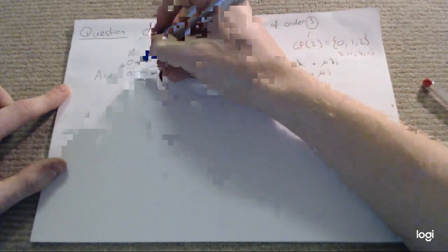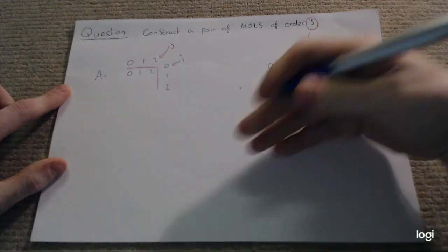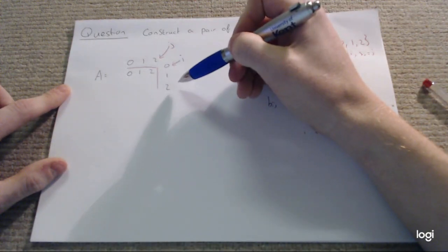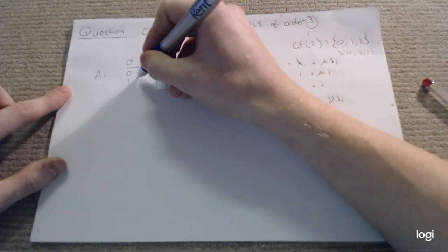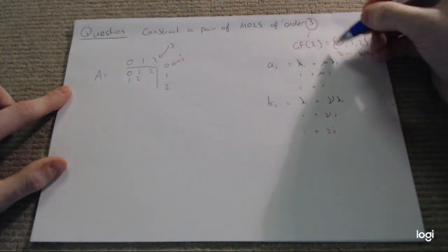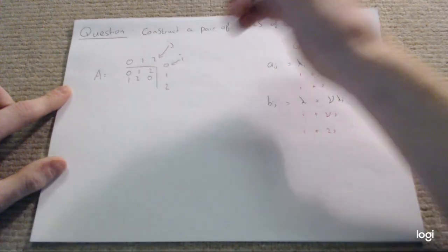Let's keep going. 0 plus 1 is 1, and 0 plus 2 is 2. Our second row, i will be 1, cycling through the j's in the same way. 1 plus 0 is 1, 1 plus 1 is 2, and 1 plus 2 is 3, but remember we're working in order 3. So 3 under modulo 3, we get 0.